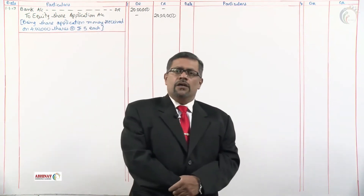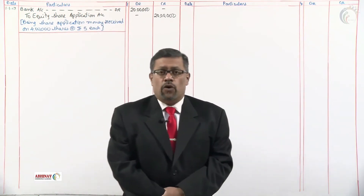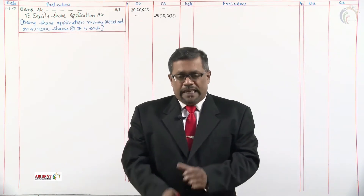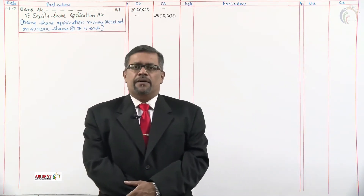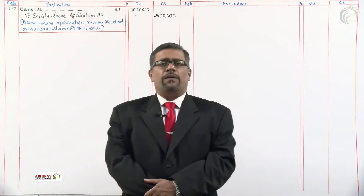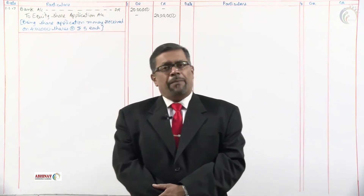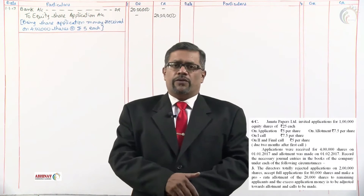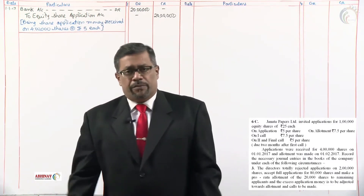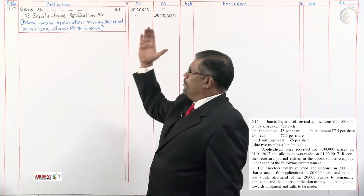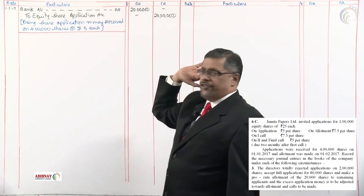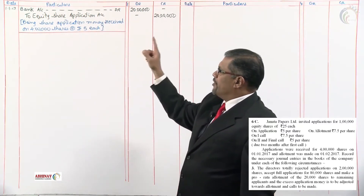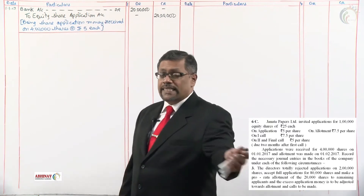In the last session we solved the working note to problem 6 part 3. In this session, let us complete this third part of problem 6 by passing the journal entries. First entry: as on 1-1-2017 for application money received — bank account debit to share application — being application money received on 4 lakh shares at rupees 5 each.